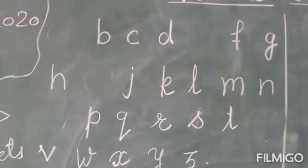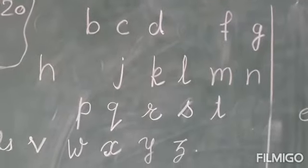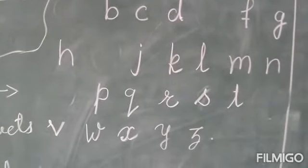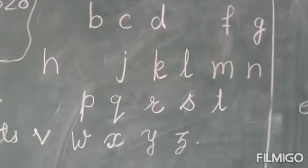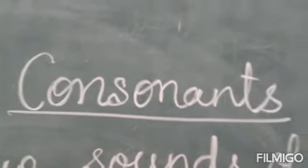Like B, C, D, F, G, H, J, K, L, M, N, P, Q, R, S, T, V, W, X, Y, Z. These are called consonants.